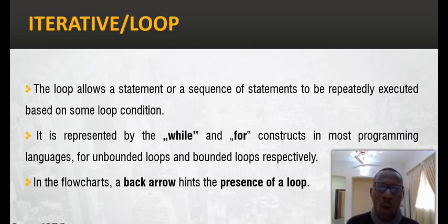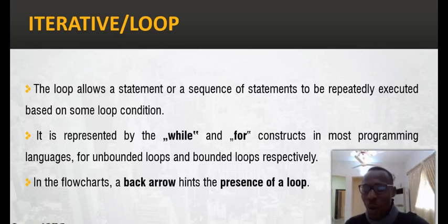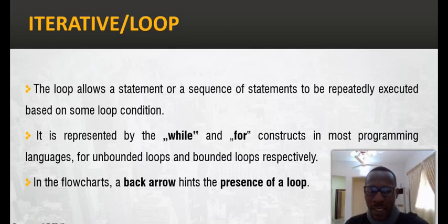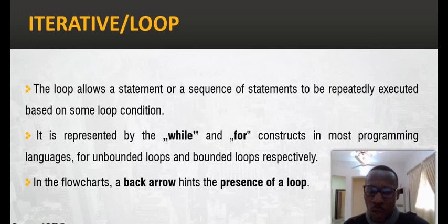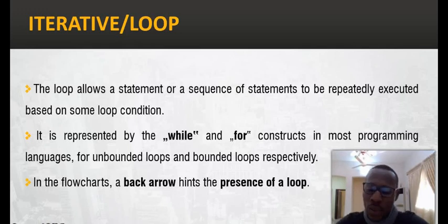We have two constructs for implementing the iterative control structure: the while loop and the for loop. The while loop says: do this while X is less than zero, while X is not equal to zero — it keeps doing that command as long as the condition holds, stopping once X becomes greater than zero. In the case of the for loop, you say: for X from 1 to 10, do this. It keeps executing — first iteration X is one, second X is two — until X reaches 10, then the process terminates.